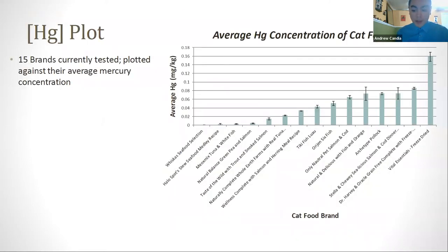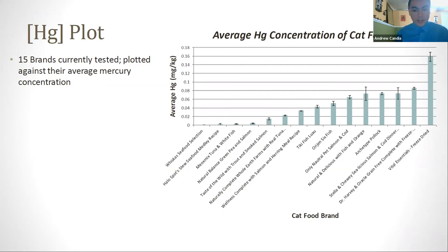For results, approximately low standard deviation and high spike percent recoveries indicate accurate data. In total, 15 brands were tested. They were organized in ascending order so it is noticeable as to which brands contain higher amounts of mercury. The question then becomes whether a statistical relationship exists between concentration and price.